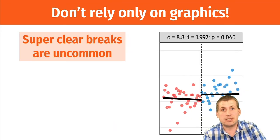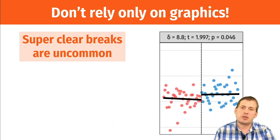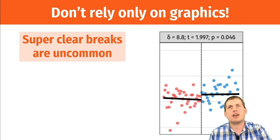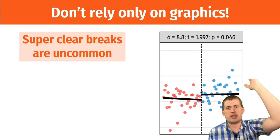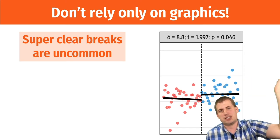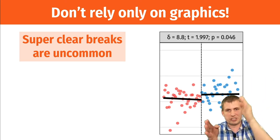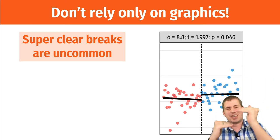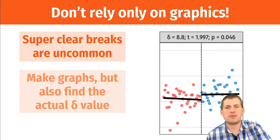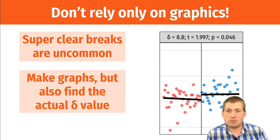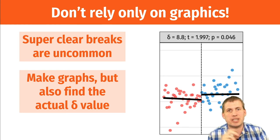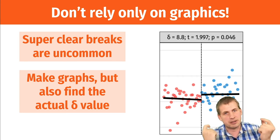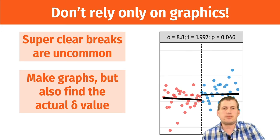Graphics are neat, but seeing super clear breaks is pretty uncommon. You're going to find smaller treatment effects, not a 3,000-point treatment effect. When you're looking just at the boundary, you'll see a slight difference between the two groups. So make graphs — they're great for data visualization — but also find the actual delta value and all the statistics around it, and don't rely just on the graphics.